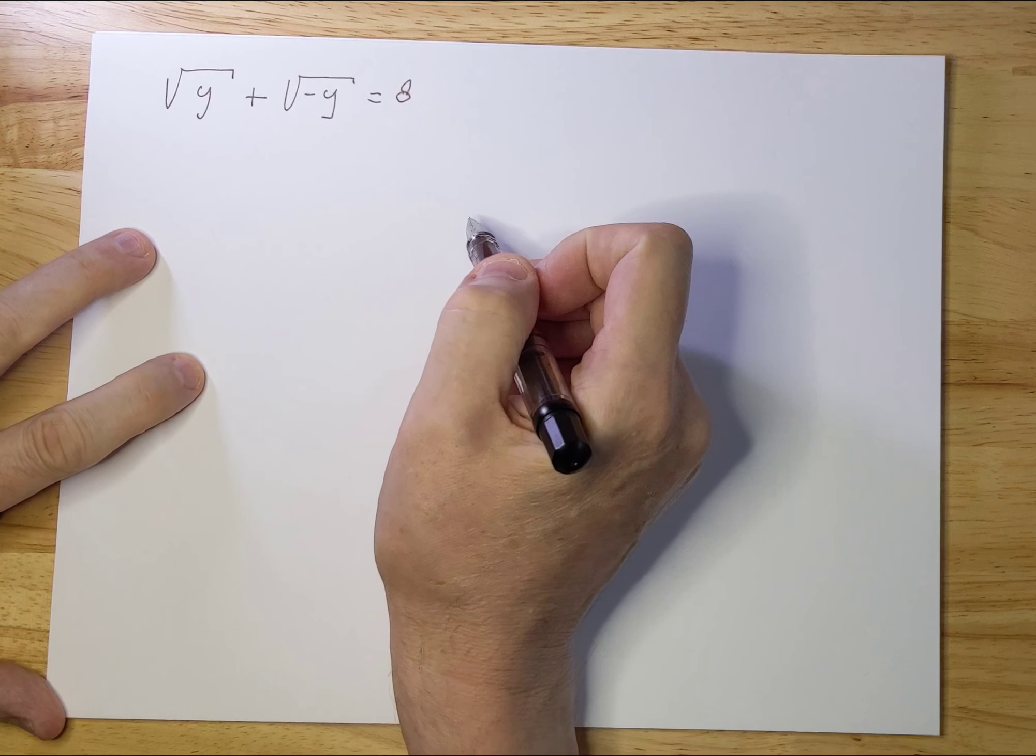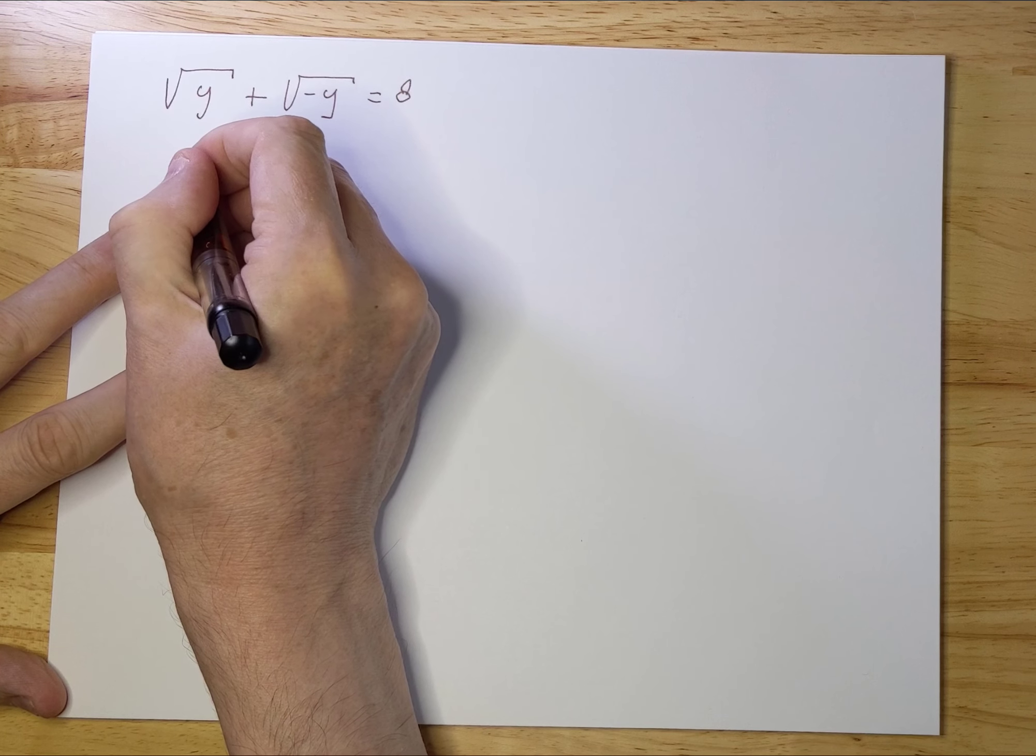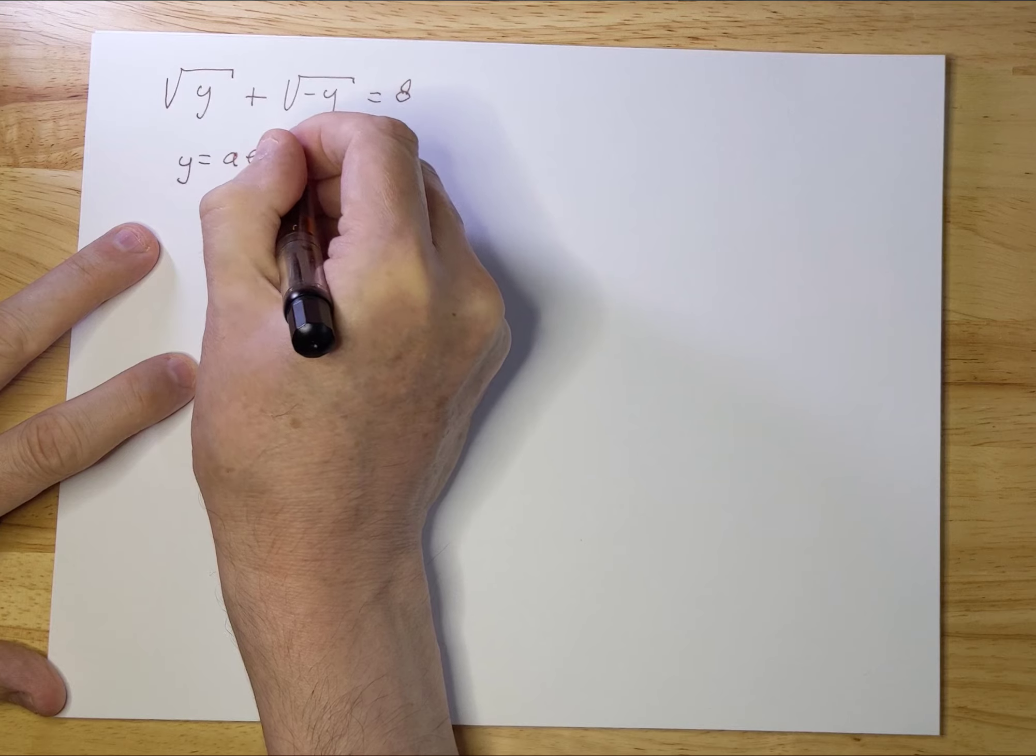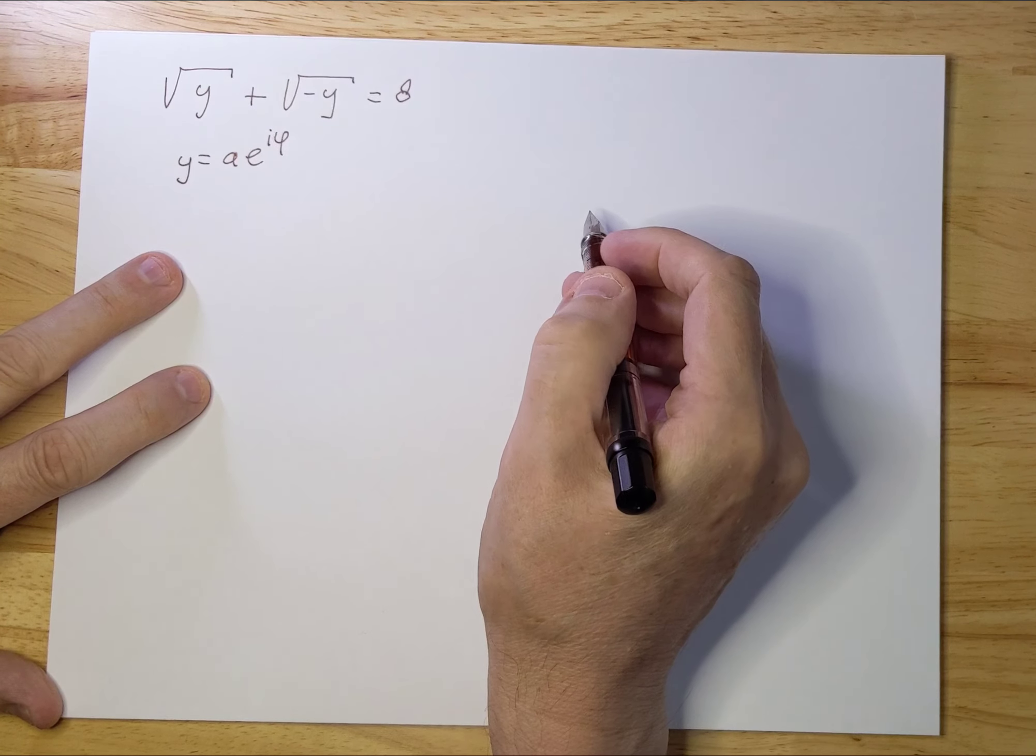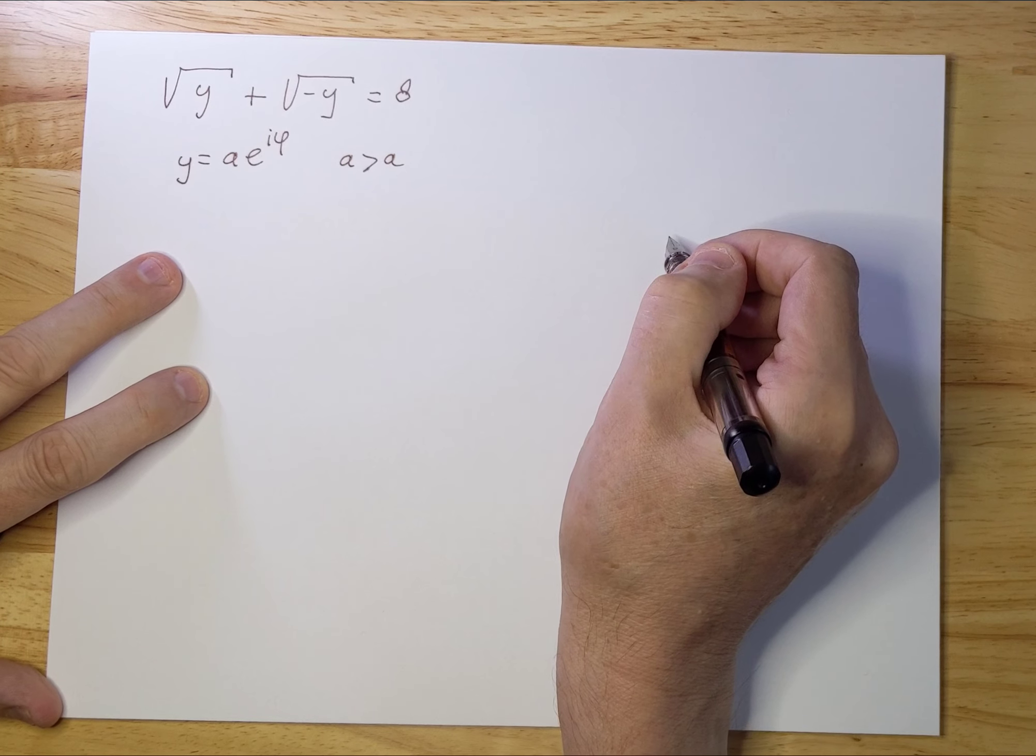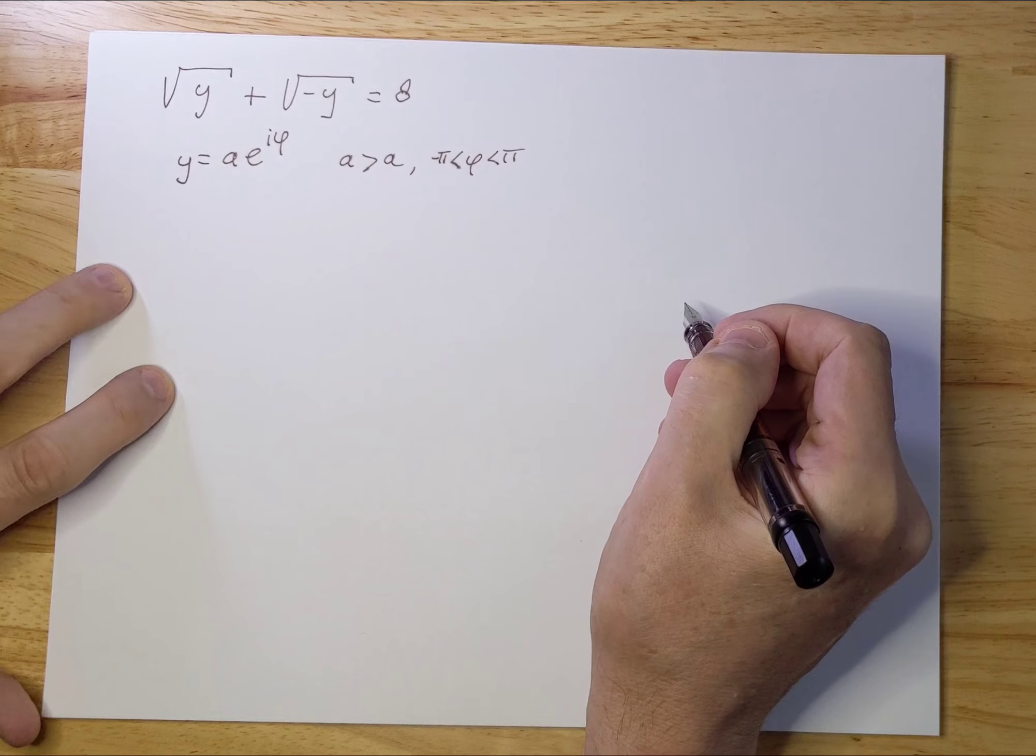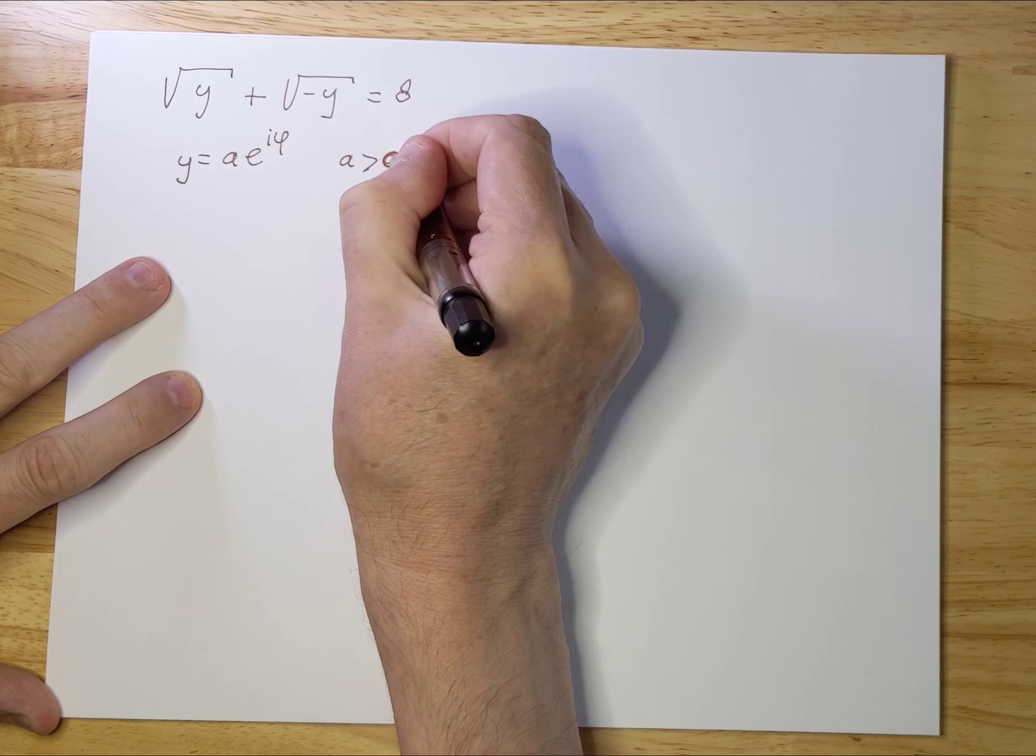The way I'm going to solve this equation is by using an interesting notation for y. So y = ae^(iφ), and I'm going to insert that into the equation. Here, a > 0 and φ varies from -π to π.